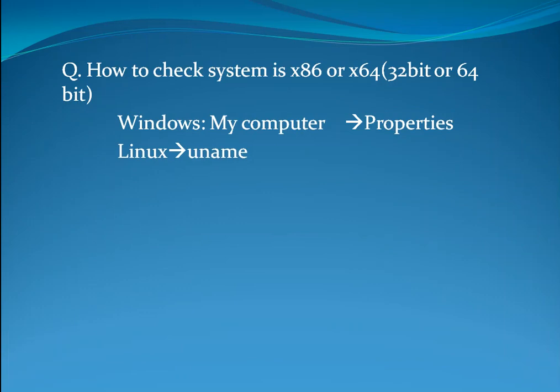How to check if the system is x86 or x64, that is 32-bit or 64-bit? In Windows, go to My Computer, right-click and select Properties — there we get whether the system is 32-bit or 64-bit. In Linux it is very simple: execute the command uname.